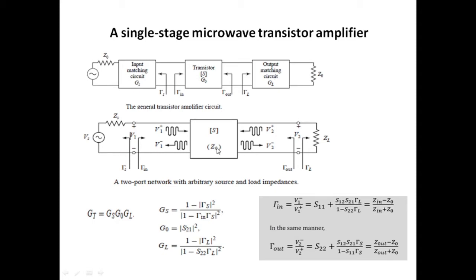Z0 represents characteristic impedance of this network and it is a real quantity. Gamma s and gamma l represent reflection coefficient looking towards the source and the load side, and gamma in and gamma out represent reflection coefficient looking towards the input and output side of the port.